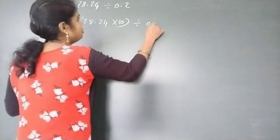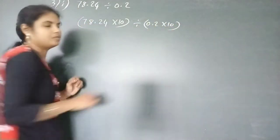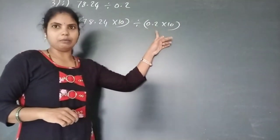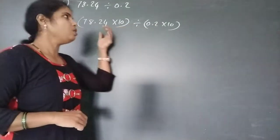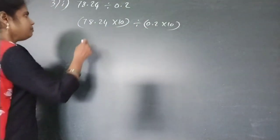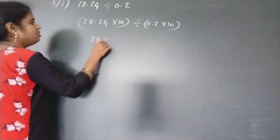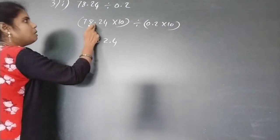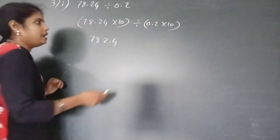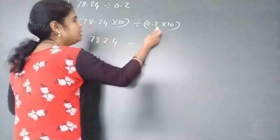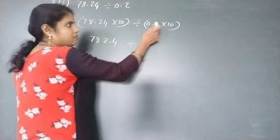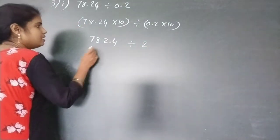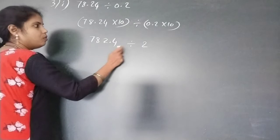Divide by 0.2 multiplied by 10. Because the divisor has only 1 decimal, we multiply both by 10. Now 78.24 multiplied by 10 — the decimal point moves 1 place to the right — becomes 782.4. And 0.2 multiplied by 10 becomes 2. So now we have 782.4 divided by 2.